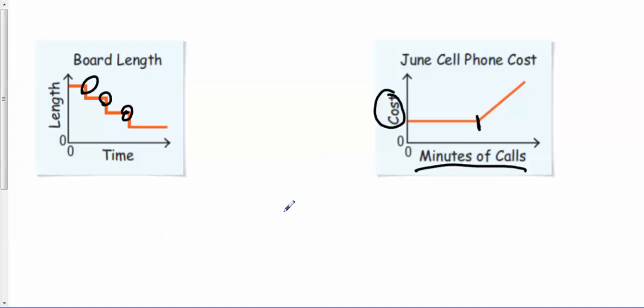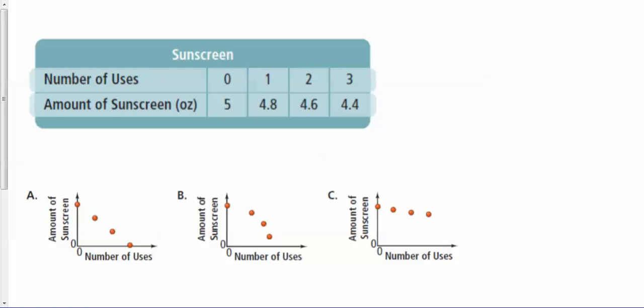Okay, let's look at another one. Here is a table of values. Let's look at the table of values and think about what if we were to graph this, what would it look like? If you look at the top part, it's the number of uses, and then the amount of sunscreen. Each one of these A, B, and C have the same thing.